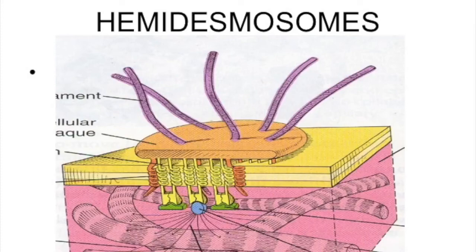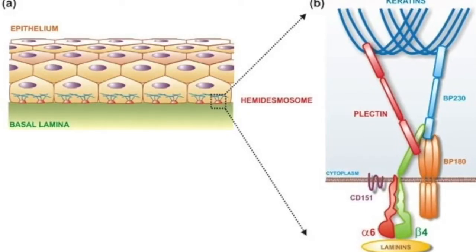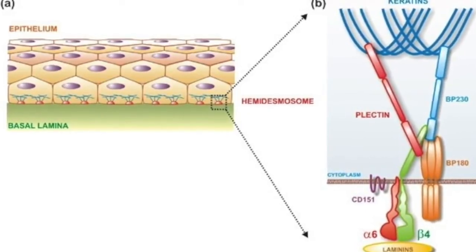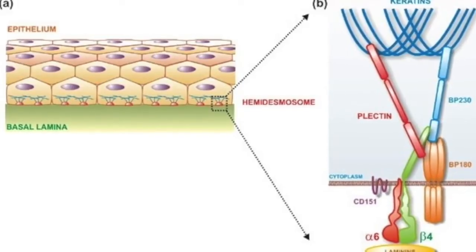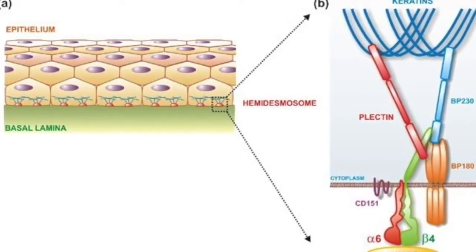Hemidesmosomes are located on the inner surface of basal plasma membranes in contact with the basal lamina. They help to attach epithelial cells to the basal lamina. The best examples are found in the basal layers of stratified squamous epithelium.